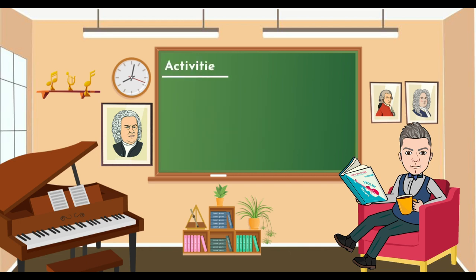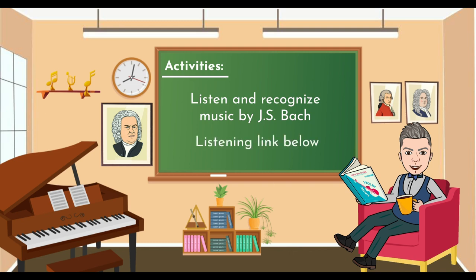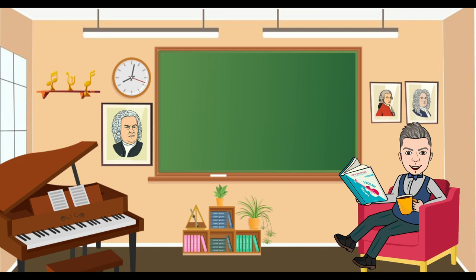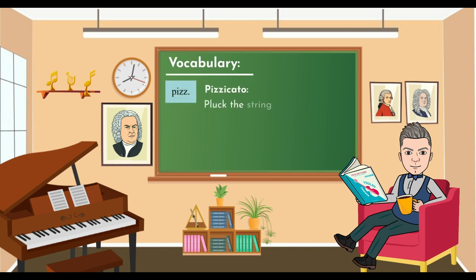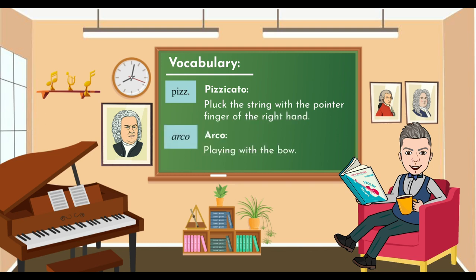Practice steps: listen and recognize music by Johann Sebastian Bach. Listening link below. Now let's go to the vocabulary to complete step 1. Pizzicato: pluck the string with the pointer finger of the right hand. Arco: playing with the bow.